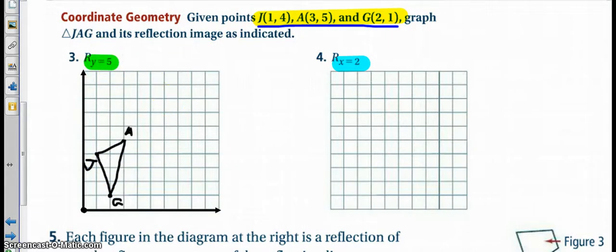So in our line y equals 5, we come up to the y equals, so we come on our vertical axis, our line y equals 5 is right here.